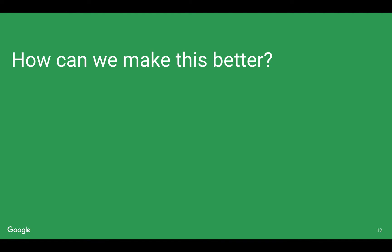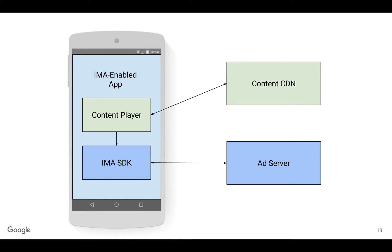So how can we make this better? In order to talk about how we can make this better, we have to get to the real root of the problem. The root of the problem is that we're taking two separate systems and trying to marry them together — your content player reaching out to the content CDN, and the IMA SDK reaching out to the ad server — trying to make two different pieces of video play nice together, and it's not always easy. So in order to make this better, we want to take these two separate systems and combine them somehow into one system.